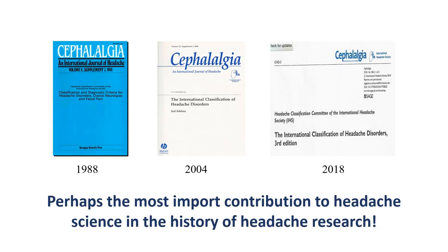The classification has been produced in three different versions. The first one was published in 1988 and the last one in 2018, and successive versions have been more and more research-based and more and more precise. So the art of classification has progressed, as it is expected to continue under new chairmanship.